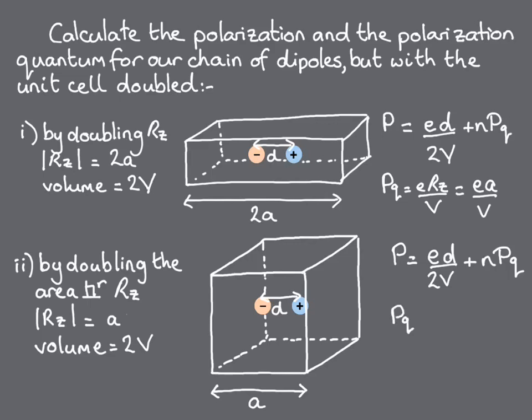For the second scenario, the polarisation quantum is Ea over 2V, half the earlier value, because the volume of the unit cell has doubled, but the lattice vector has stayed the same.